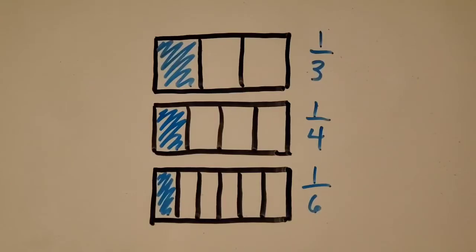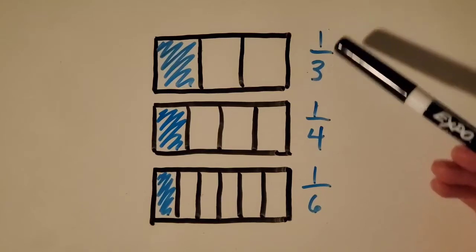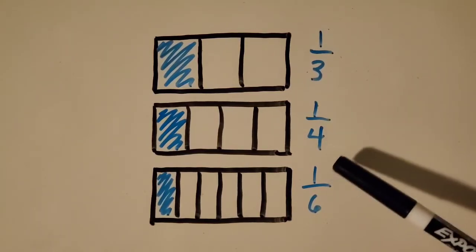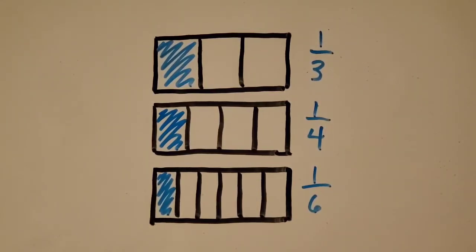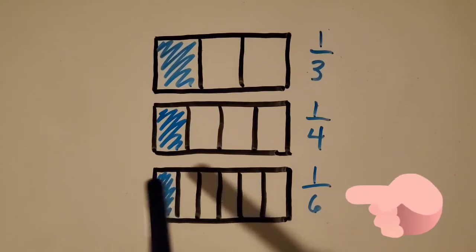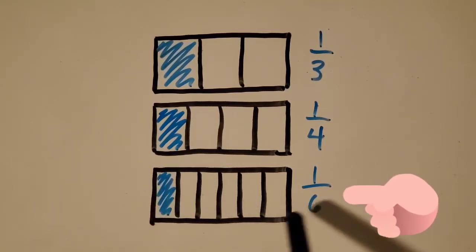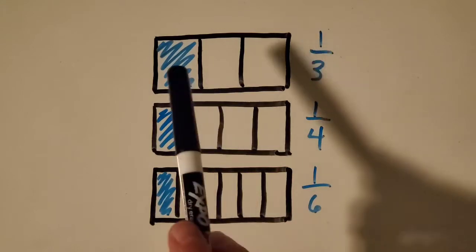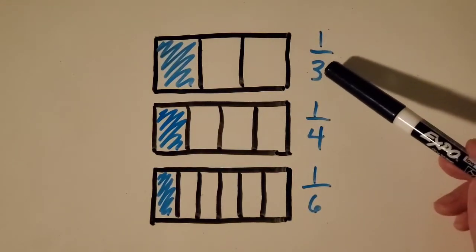Now I want to show you one more fraction with a one as the numerator. We have one-third, one-fourth, and one-sixth. Which fraction is the least? Good. If you look at the amount, one-sixth takes up a lot less of the whole than one-third or one-fourth. So what do you think about this?